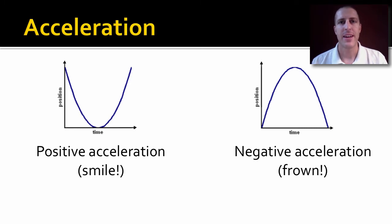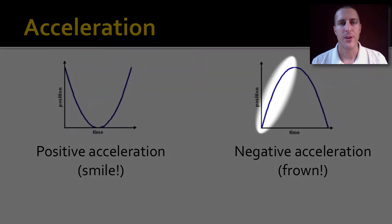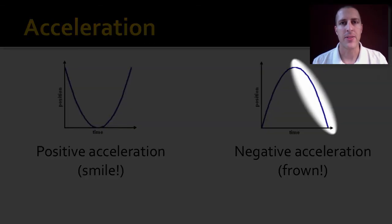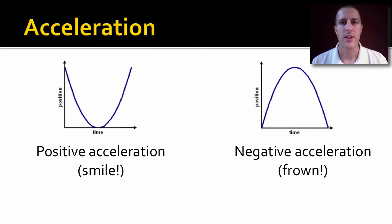On the graph on the right, we have negative acceleration, slowing down going in the positive direction, and then it starts speeding up going in the negative direction. The shortcut would be, it looks like a frown. Frowns are negative.